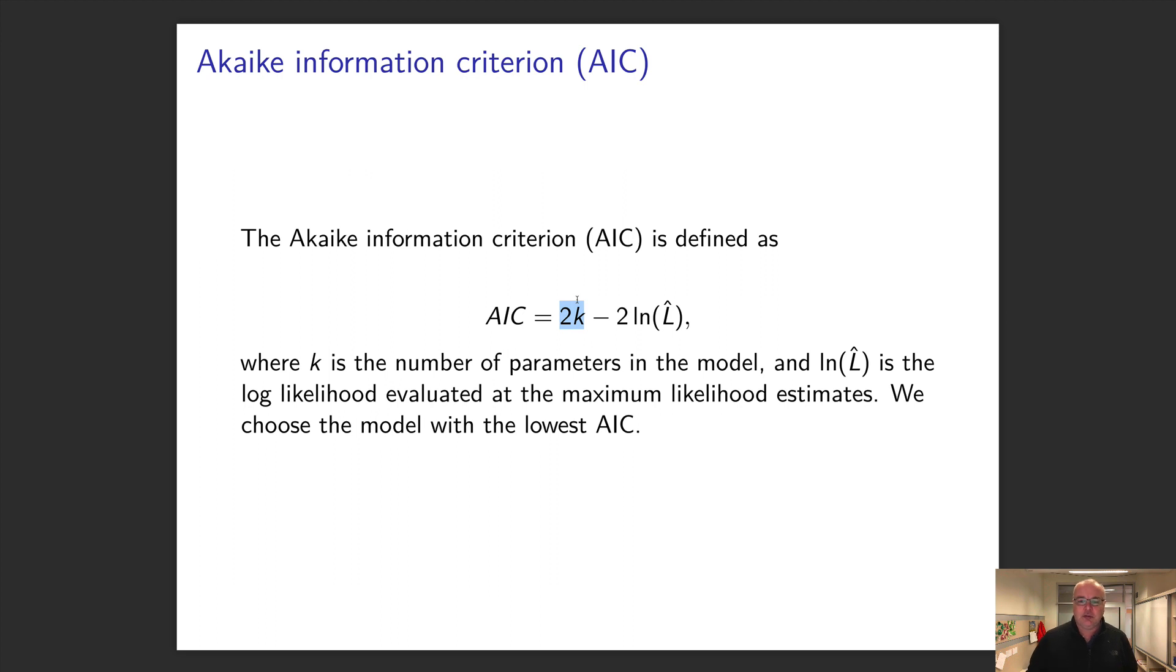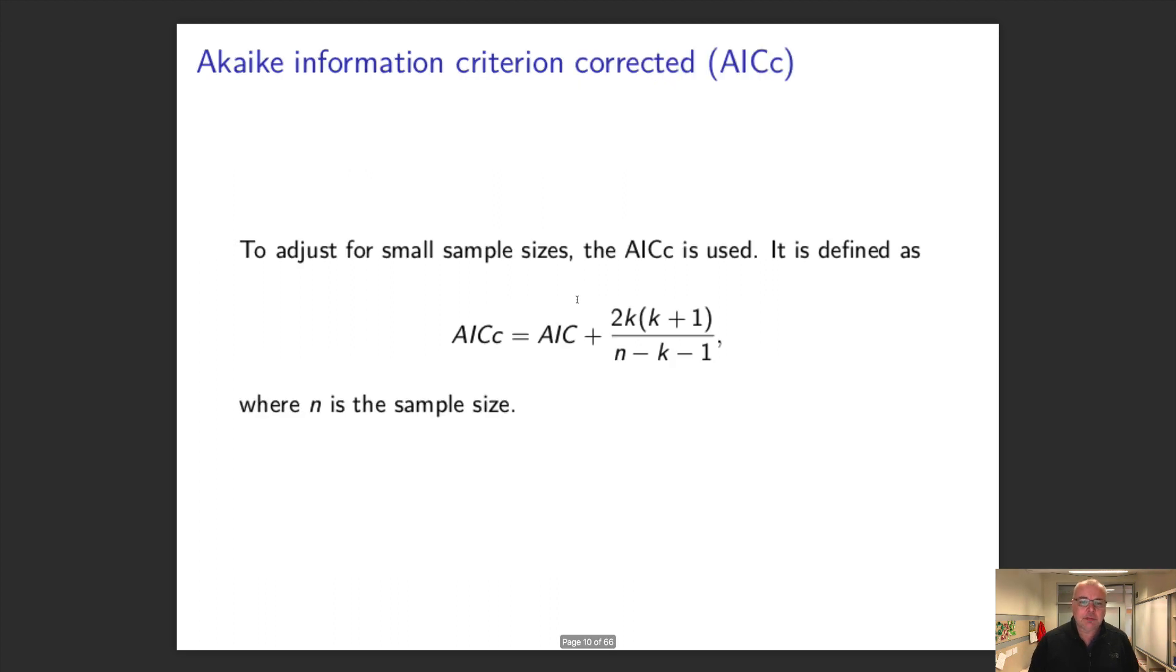You say how well does my model fit, but penalize it for the number of terms. Now some people have adapted that. The first adaptation they did is what's called the AIC corrected. So they said, well that's pretty good and it has good properties when your sample size is large, but how do you deal with small sample sizes?